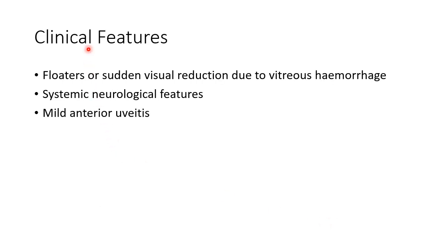Coming to the clinical features of Eales disease, the patient usually presents with floaters or sudden visual defect due to vitreous hemorrhage. There can be associated systemic neurological features and mild anterior uveitis.